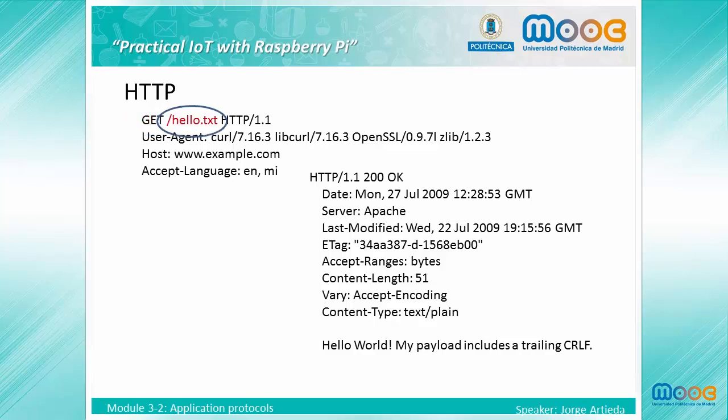The request method is followed by the URL requested and the hostname requested, which makes a minimum HTTP request. Other optional fields give information to the server about the client who is requesting the information, allowing the server to give a response customized for the client.